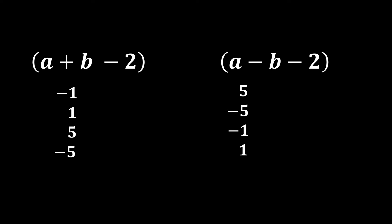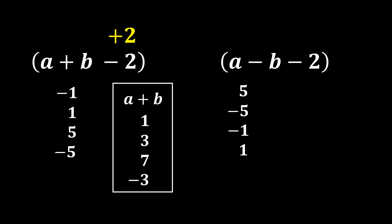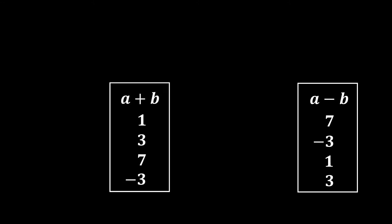We have a column for (a + b - 2) and another for (a - b - 2). To find a + b, we add 2 to the first column, giving values: 1, 3, 7, -3. Similarly, adding 2 to the second column gives a - b values: 7, -3, 1, 3. So we now have all four (a + b, a - b) pairs directly.